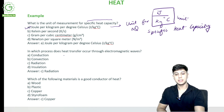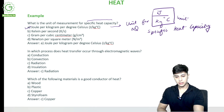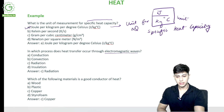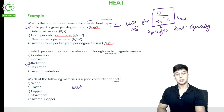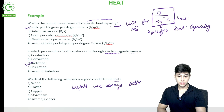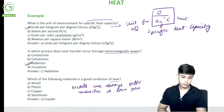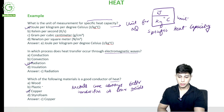In which process does heat transfer occur through electromagnetic waves? The options are conduction, convection, radiation, and insulation. Since they mentioned electromagnetic waves, the answer is radiation. Which of the following materials is a good conductor of heat — wood, plastic, copper, or styrofoam? Metals are always better conductors, and amongst the options, copper is the metal. Copper conducts heat very readily and fast.